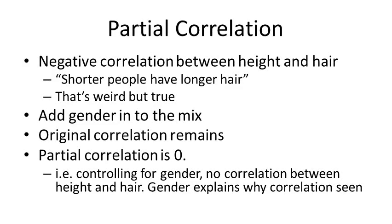Here's an example of partial correlation. There's a negative correlation between height and hair — specifically, shorter people have longer hair. That's a strange statement, but it is actually true. If you add gender into the mix, it makes sense: women, who are on average shorter than men, have on average longer hair. When you factor in gender along with height to predict hair, the original correlation remains, but the partial correlation — controlling for gender — is zero. Gender explains why the overall correlation is seen.